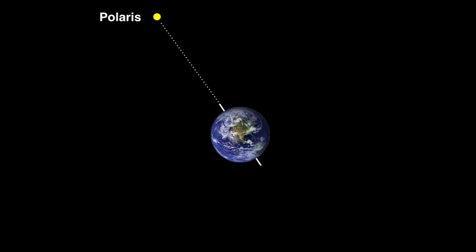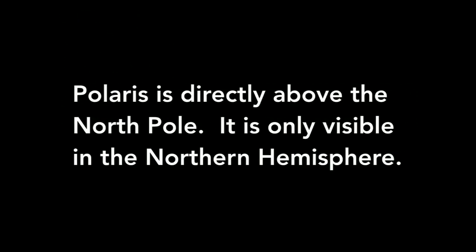The Earth rotates around this star. In other words, as we turn, that star stays in a fixed position, but everything else seems to spin around it. And that's because Polaris is directly above the North Pole. And it's only visible to the Northern Hemisphere.